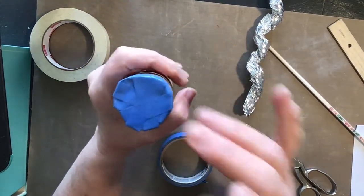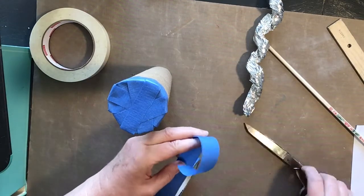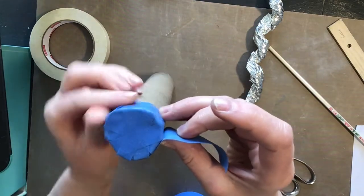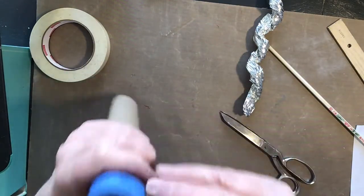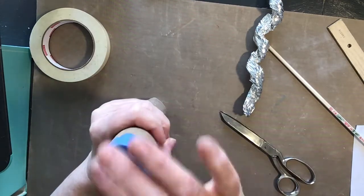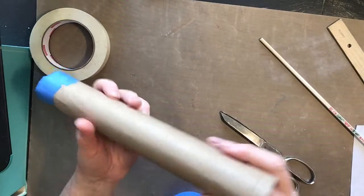Take another piece, about six or seven inches, and wrap it right near the edge. Rub it down really good. And then your aluminum foil goes inside there.